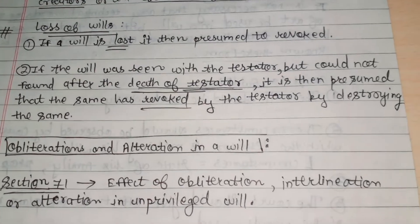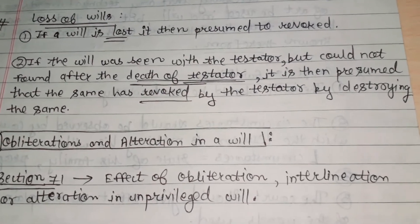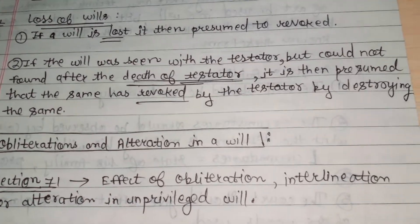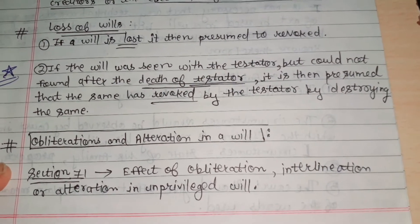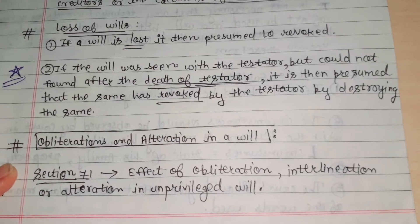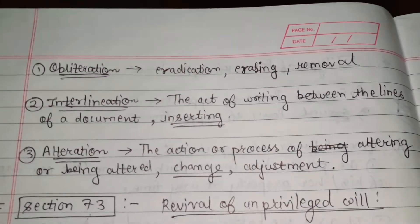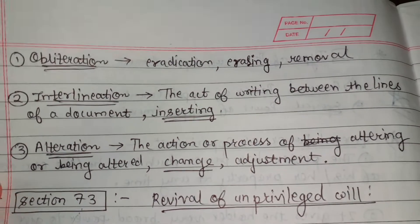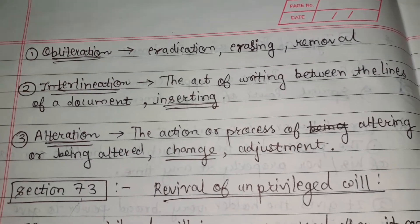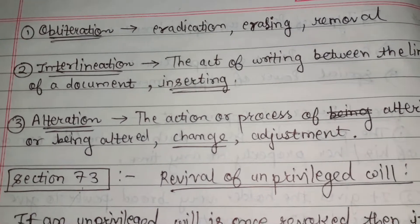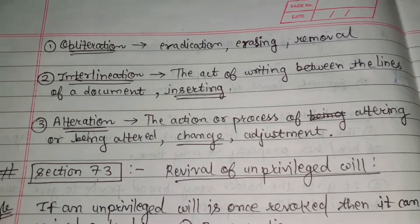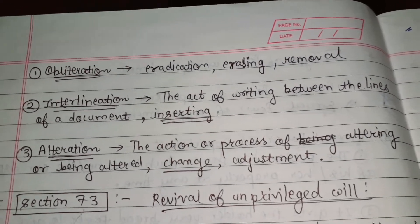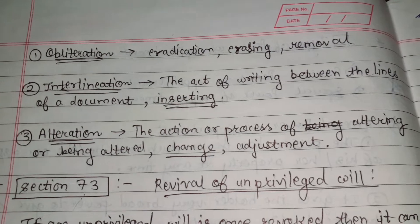Next is obliteration and alteration in a will. Section 71 is about the effect of obliteration, interlineation, or alteration in an unprivileged will. Obliteration means eradication. Interlineation means the act of writing between the lines of a document — that is, inserting text. Alteration means the action or process of altering or being altered — a change or adjustment.